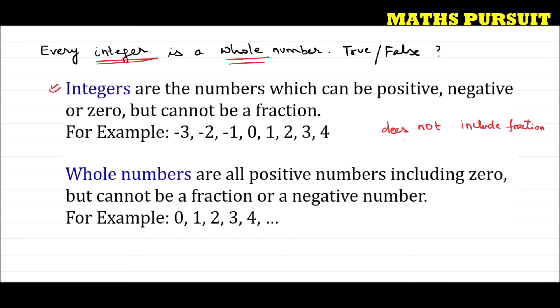Fractions like 0.7, 0.6, 1/2, or 3/5 — integers do not include these. Apart from this, integers include negative numbers, zero, as well as positive numbers. This is the definition of integers.